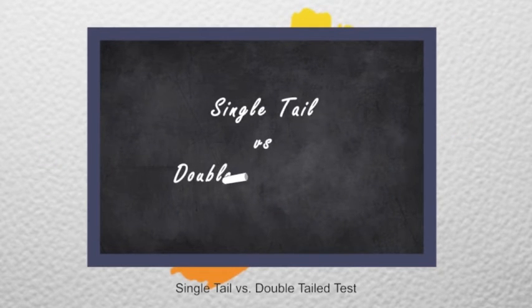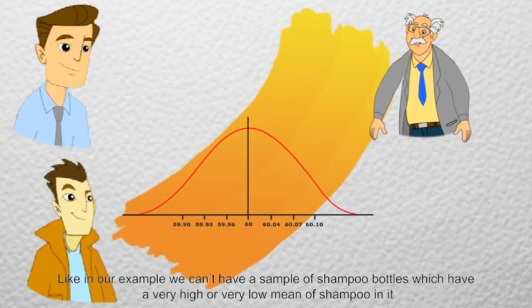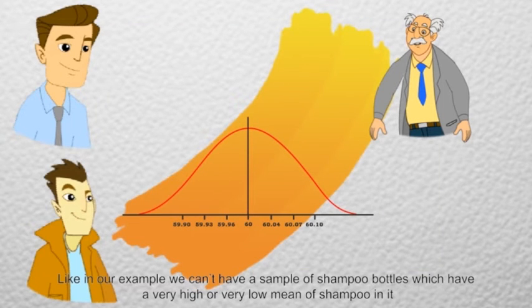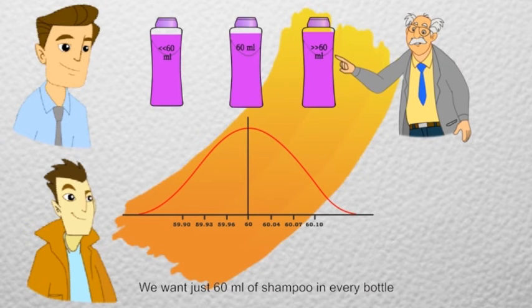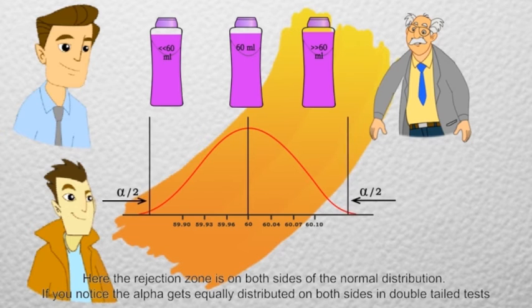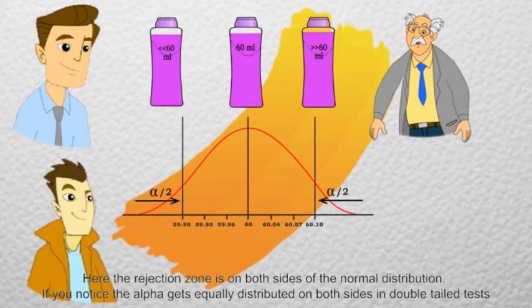Single tail versus double tail test. Like in our example, we can't have a sample of shampoo bottles which have a very high or very low mean of shampoo in it. We want just 60 ml of shampoo in every bottle. Here the rejection zone is on both sides of the normal distribution.